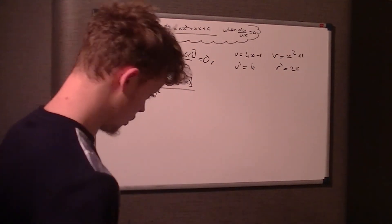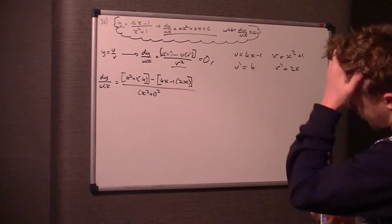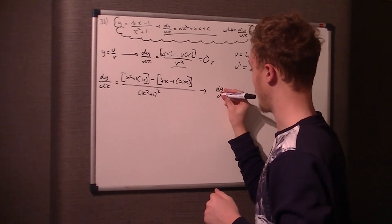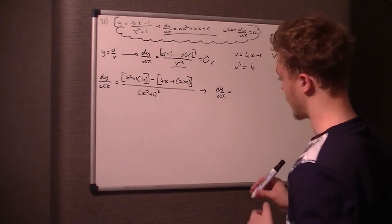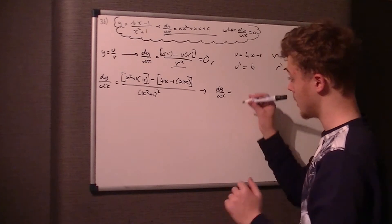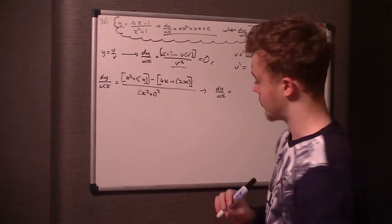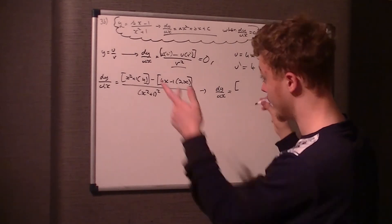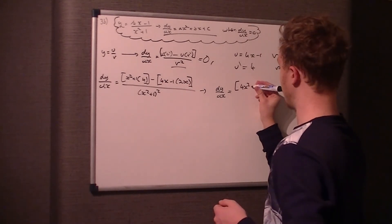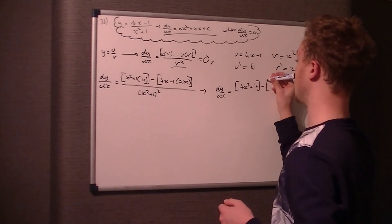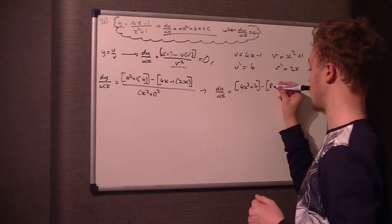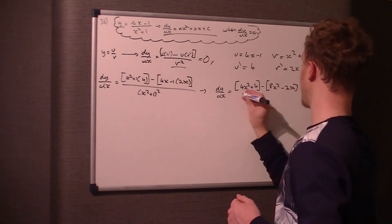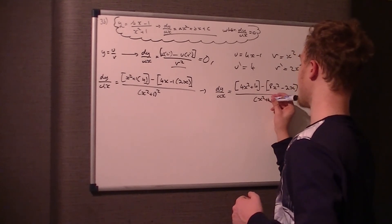I wouldn't expand that denominator out. Any sane person would expand the brackets on top. 4 times x² is 4x², plus 4, in square brackets, take away 4x times 2x, that's 8x² take 2x, over (x² + 1)².